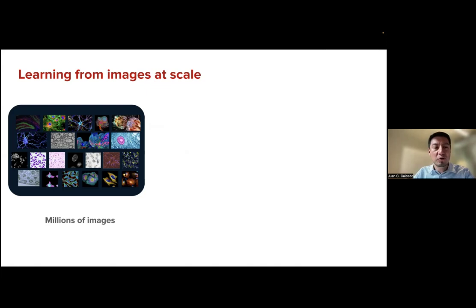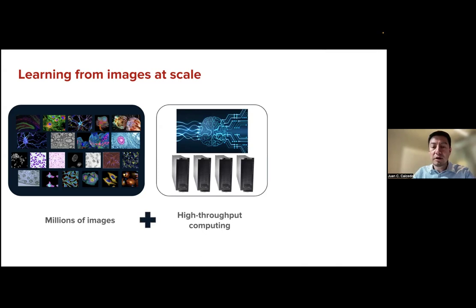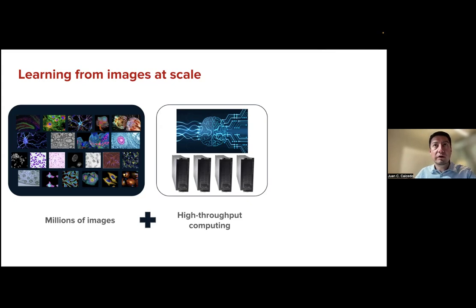In order to apply machine learning algorithms, we also need high throughput computing. The algorithms behind those methods for extracting information from images are very computationally expensive and require a lot of computing power to transform those images into something we can use for making sense of the biology behind the experiments. We are fortunate to have the Center for High Throughput Computing here on campus and we are collaborating with them to collect millions of images and create software that can analyze those images automatically.